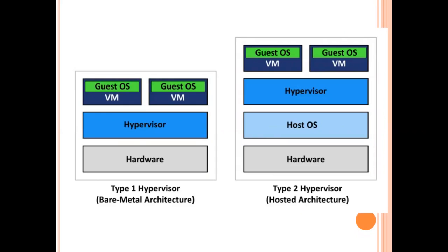A hypervisor is also called a virtual machine monitor. A virtual machine is the machine on which multiple guest operating systems can run. We can create multiple virtual machines over a single PC. So the hypervisor is a layer of abstraction between the hardware and those virtual machines.